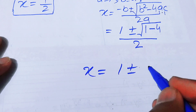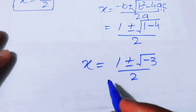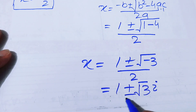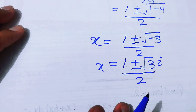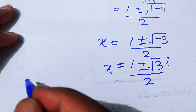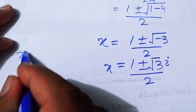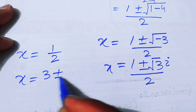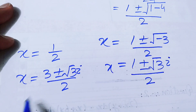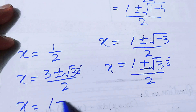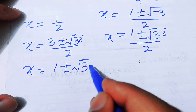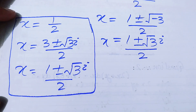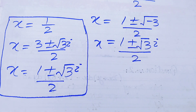Applying the definition of i, we get x = (1 ± √3·i) / 2. Hence the five roots of the equation are: x = 1/2; x = (3 ± √3·i) / 6 (from equation 1); and x = (1 ± √3·i) / 2 (from equation 2). Thank you for watching — please subscribe for more exciting videos.